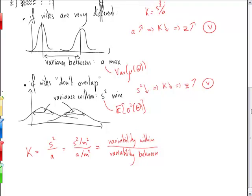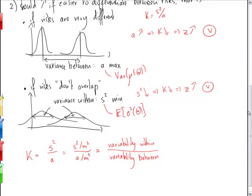So K is an indicator of the ratio between the variability within, which is something that is bad for credibility, and the variability between, which is something that is good for credibility.